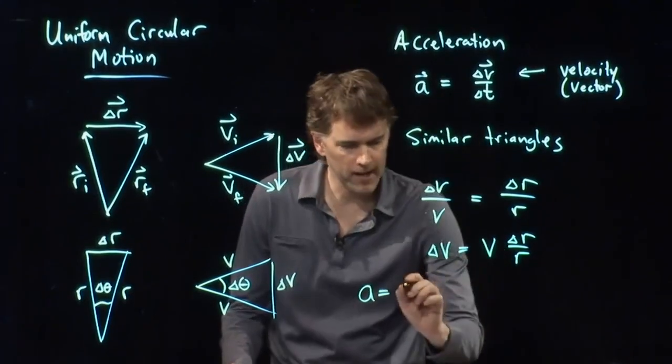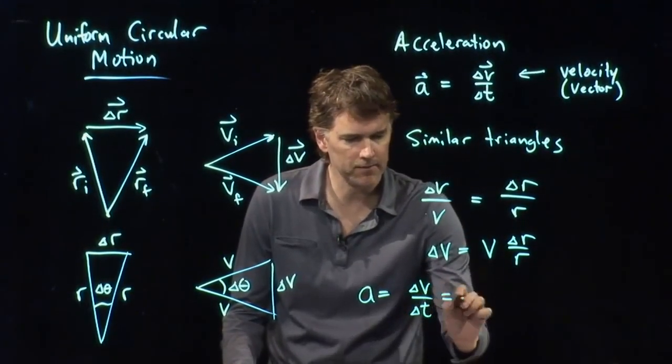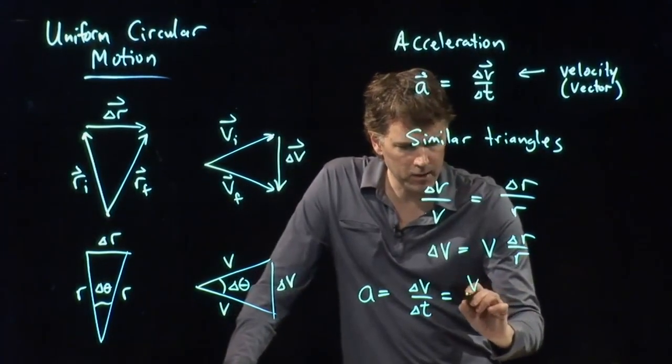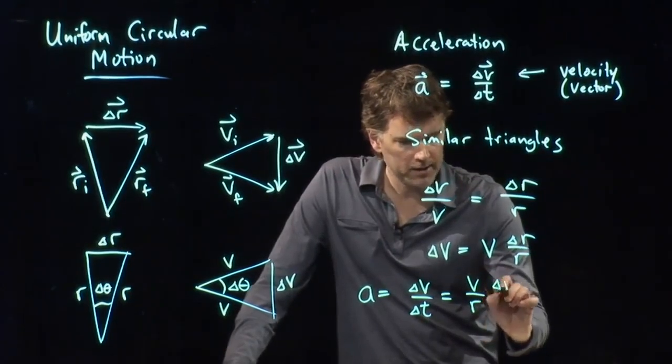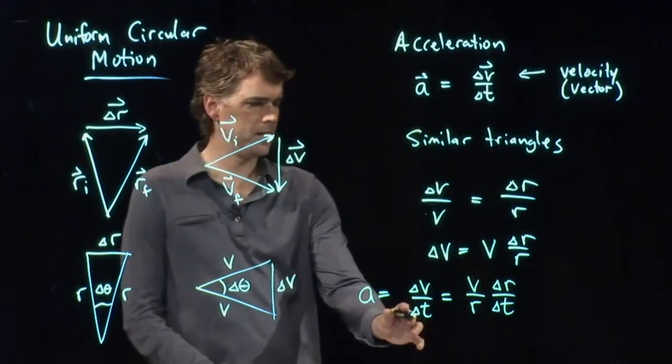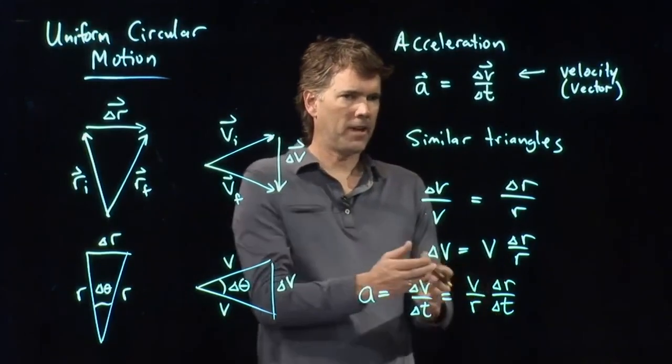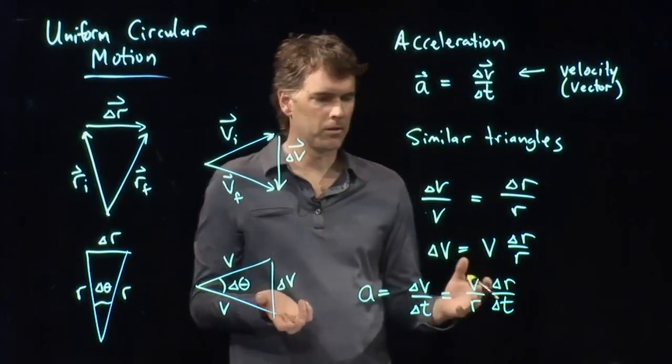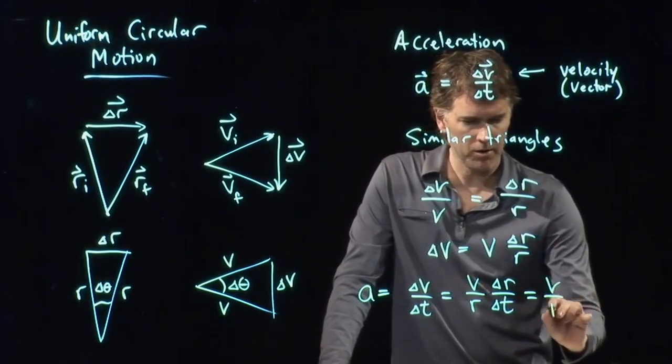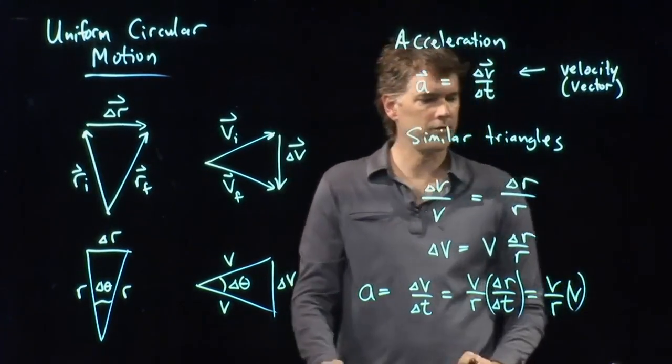A, the magnitude of a we said was delta v over delta t. And here's delta v. And so I can plug that in. I get v over r times delta r over delta t, which I carried in from there. But delta r over delta t, that's just how far you've gone in some amount of time, which is, again, just your speed. Delta r over delta t is just v.